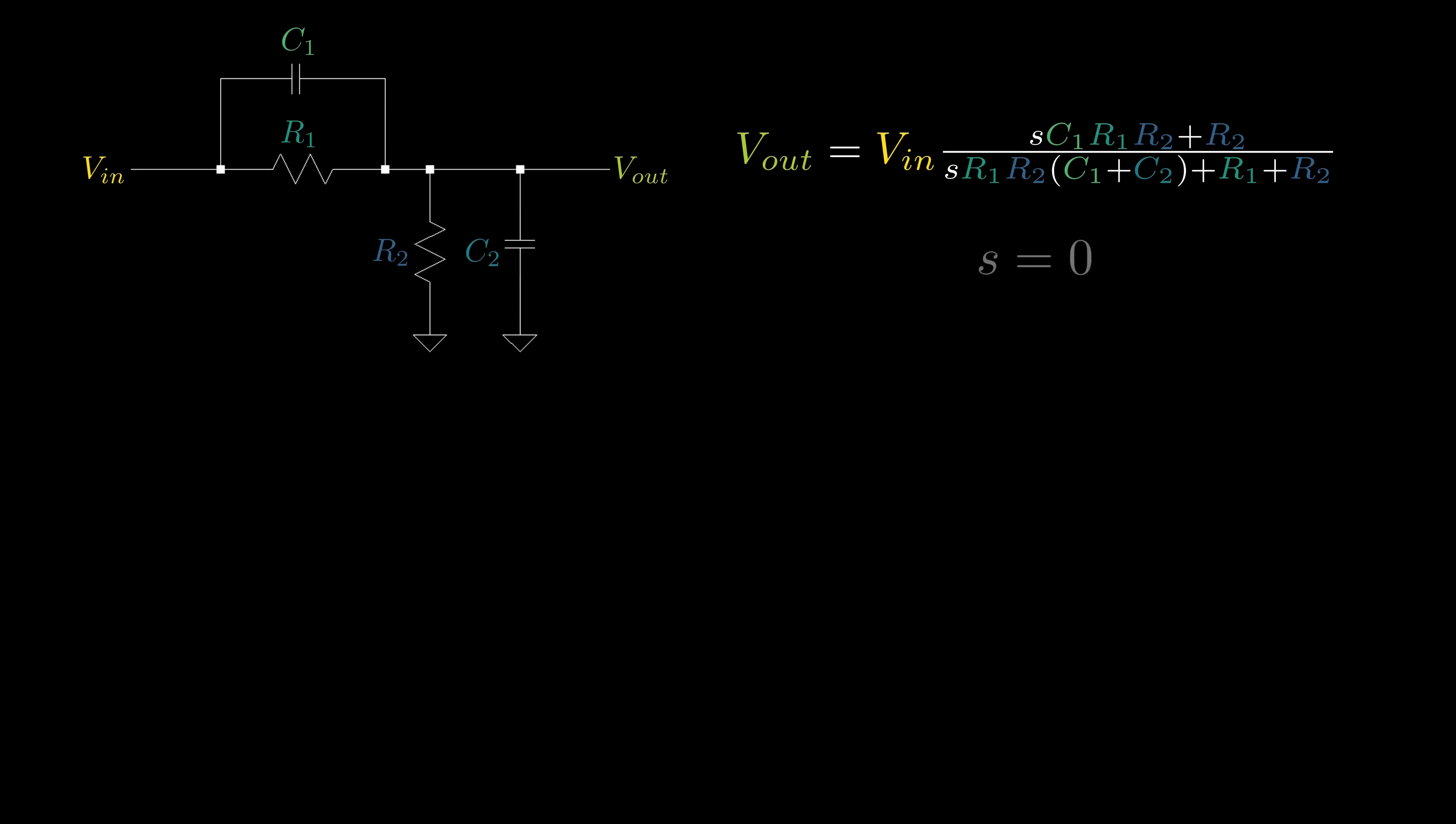Notice what happens when we set S equals 0. We get the same gain as we did when we had just the resistors. This makes sense, as at low frequencies, the capacitors have a very high impedance compared to the resistors, so the parallel combination can be approximated as just the resistance. Likewise, for S approaching infinity, now we were left with the gain we got for the purely capacitive circuit. This time, the capacitor impedances are very small compared to the resistor impedances, therefore the parallel impedance is approximately the capacitor impedance.